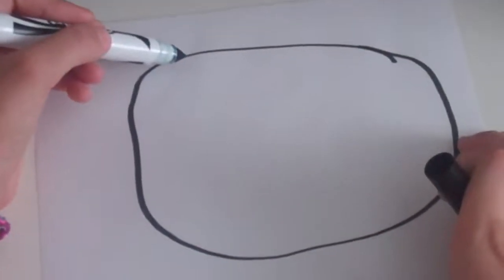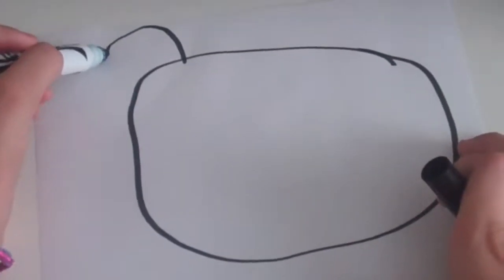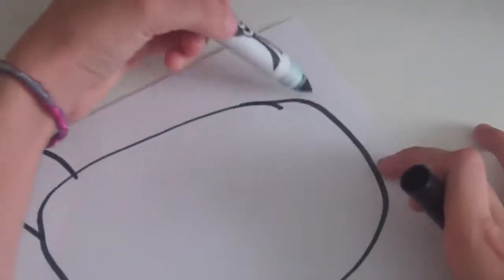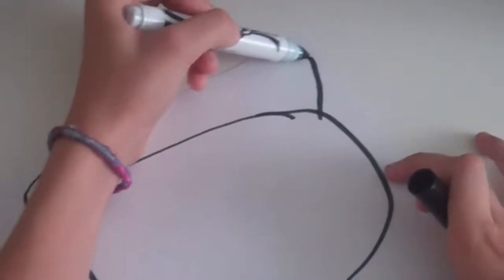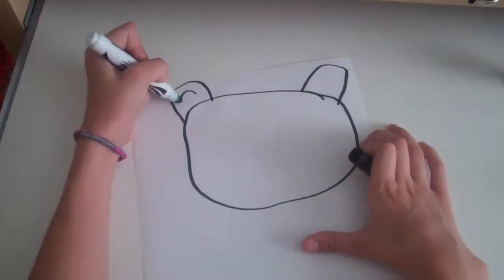Step 2. Make the ears. They're kind of triangular, but round. I'm going to tell you this is not going to be the best. Step 3. Add circles in the ears.